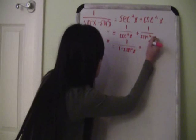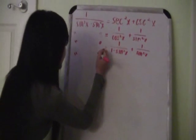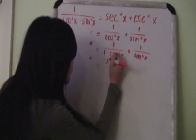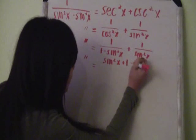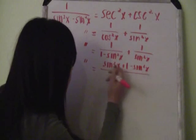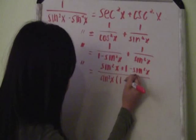We'll just bring down the 1 over sine squared x. Then we would use the least common denominator, which would be sine squared x plus 1 minus sine squared x over sine squared x times 1 minus sine squared x.